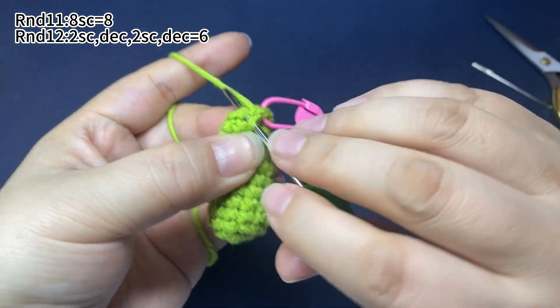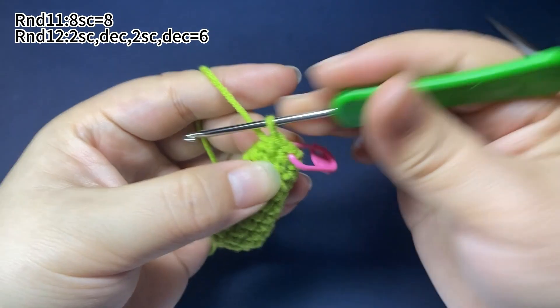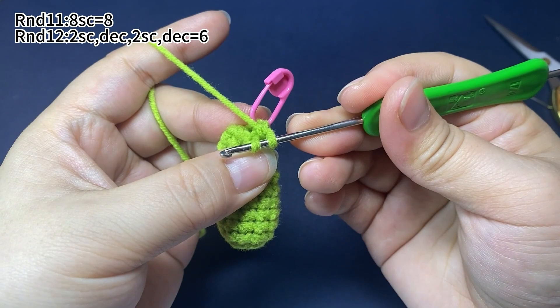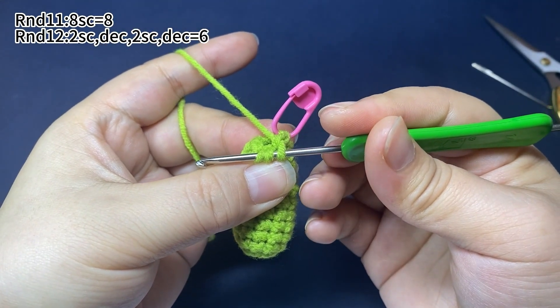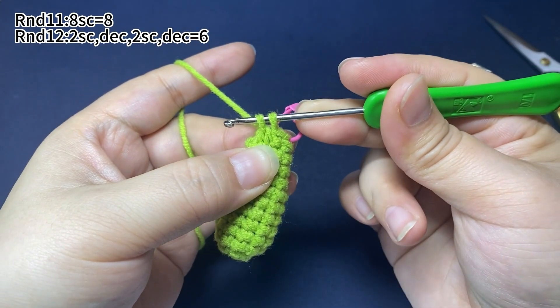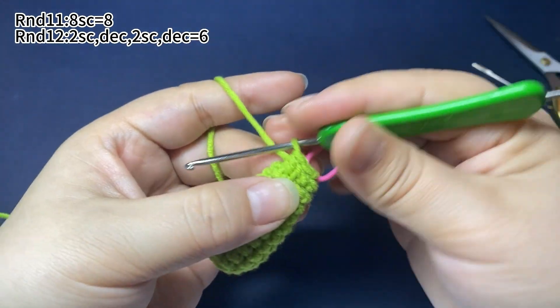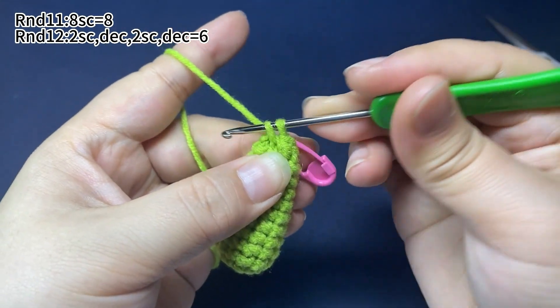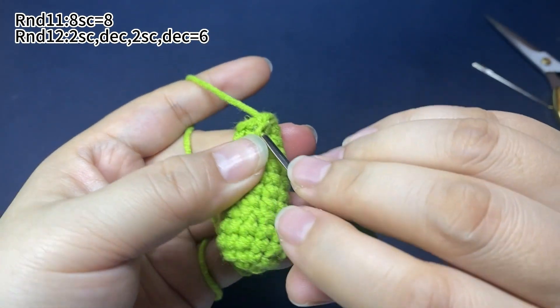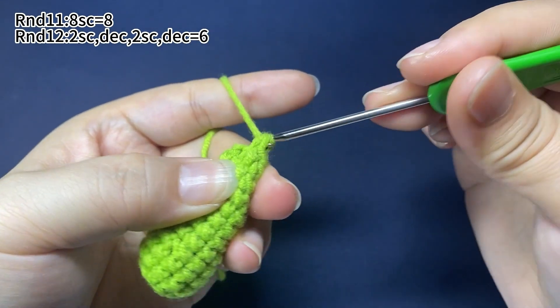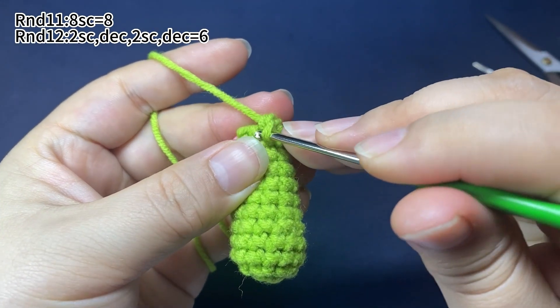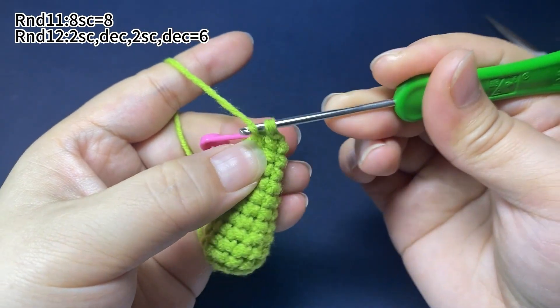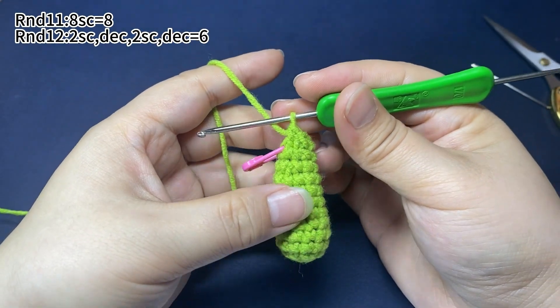In the next stitch, work 1 single crochet. Now 1 decrease. Repeat: 2 single crochets, then 1 decrease. Round 12 is finished.